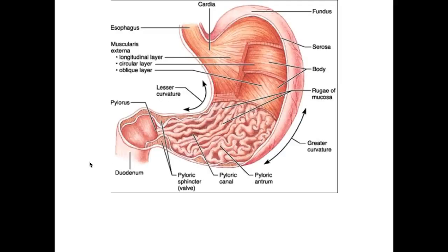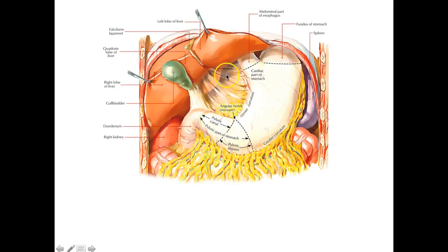In this picture you can see the lesser curvature and the greater curvature labeled. If you open it up, you'll see the folds on the inside called the rugae. Here is the pyloric sphincter — for any sphincter to form, this is where the muscularis externa becomes very thick to form this valve-like structure. Here is the lesser omentum and the greater omentum, which hangs over your other abdominopelvic organs.